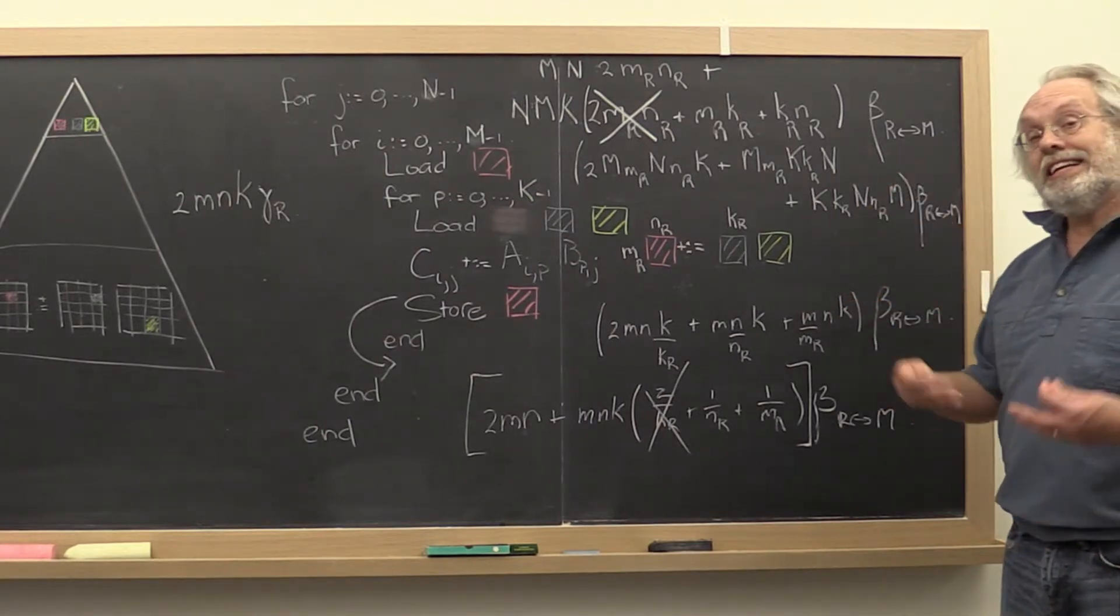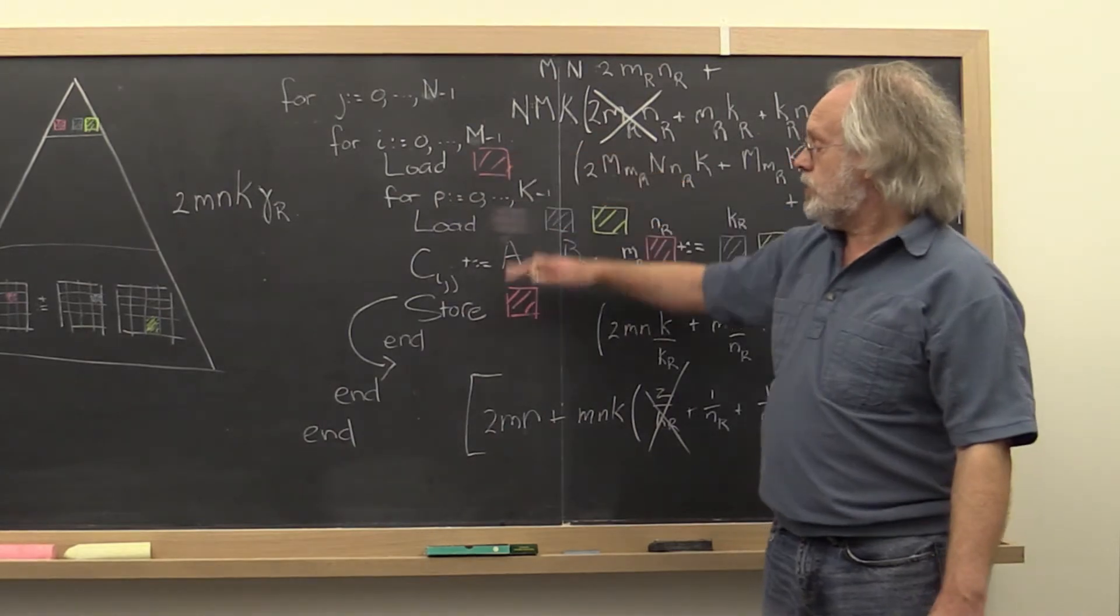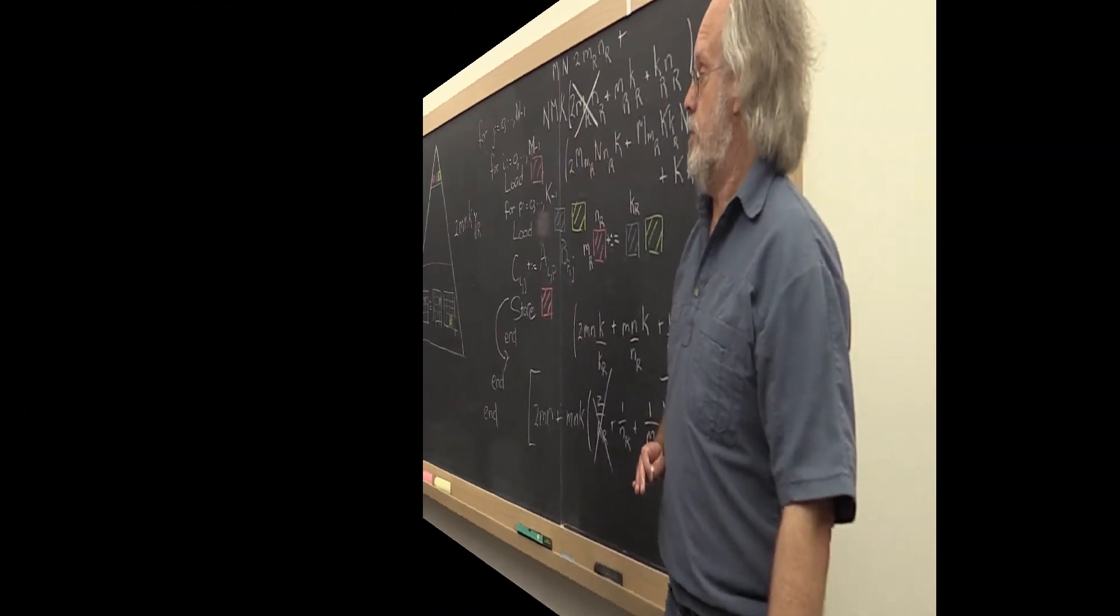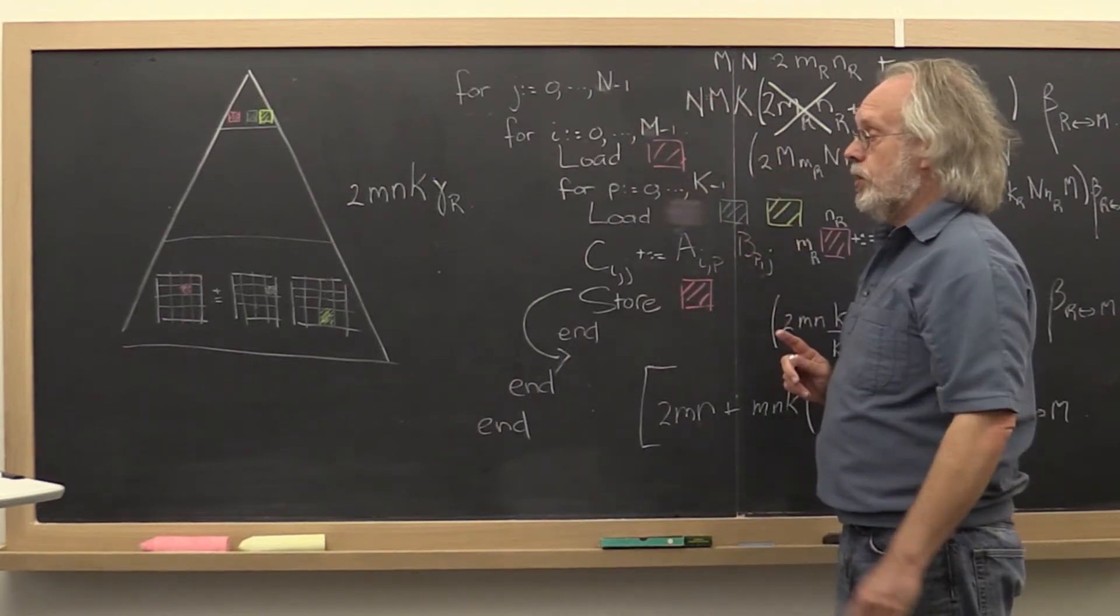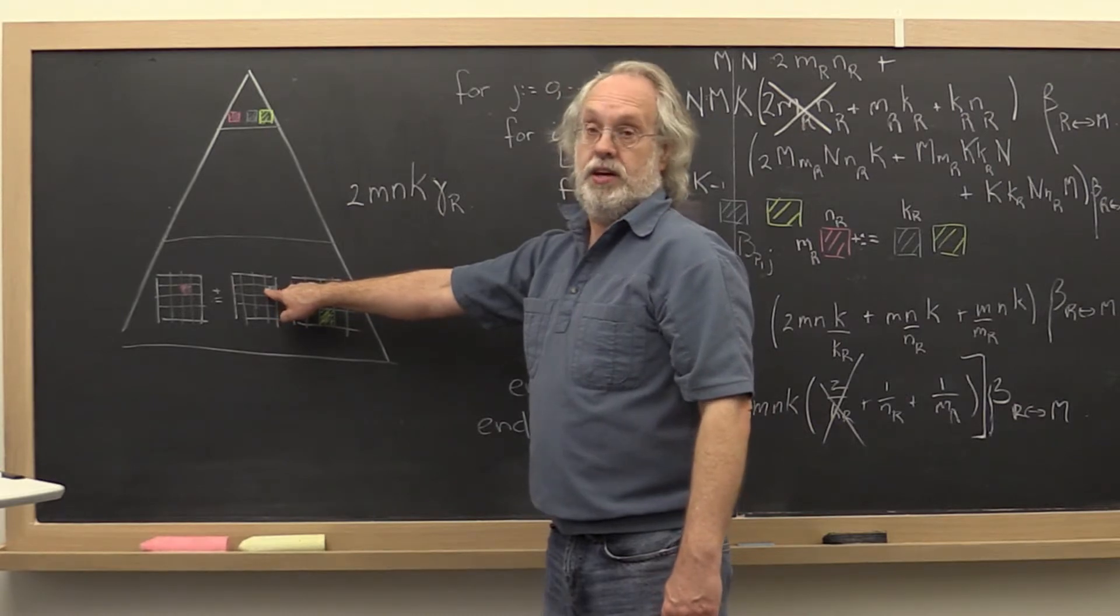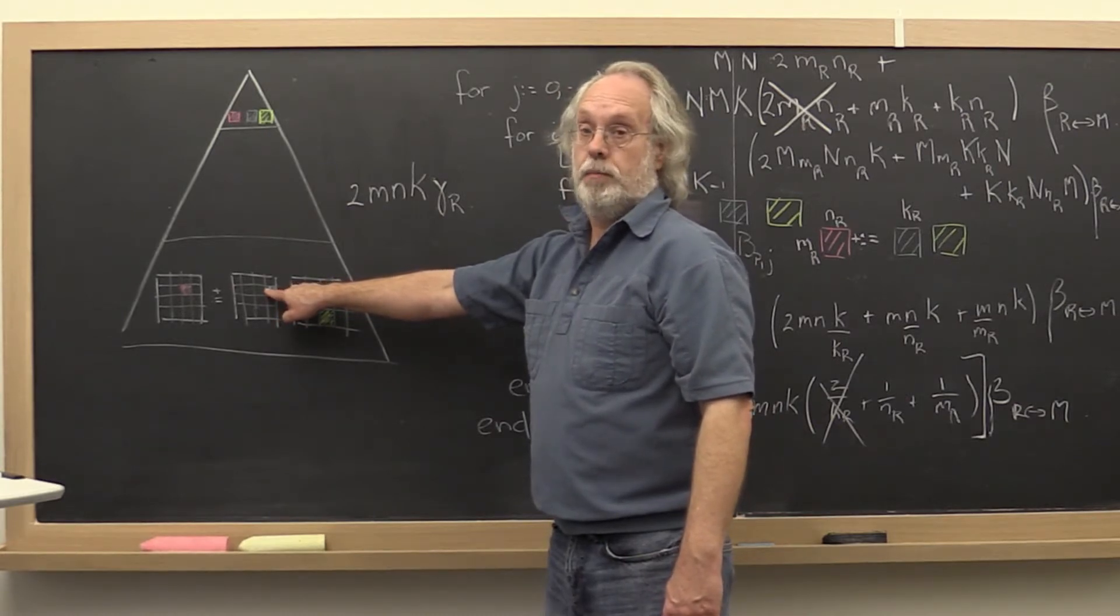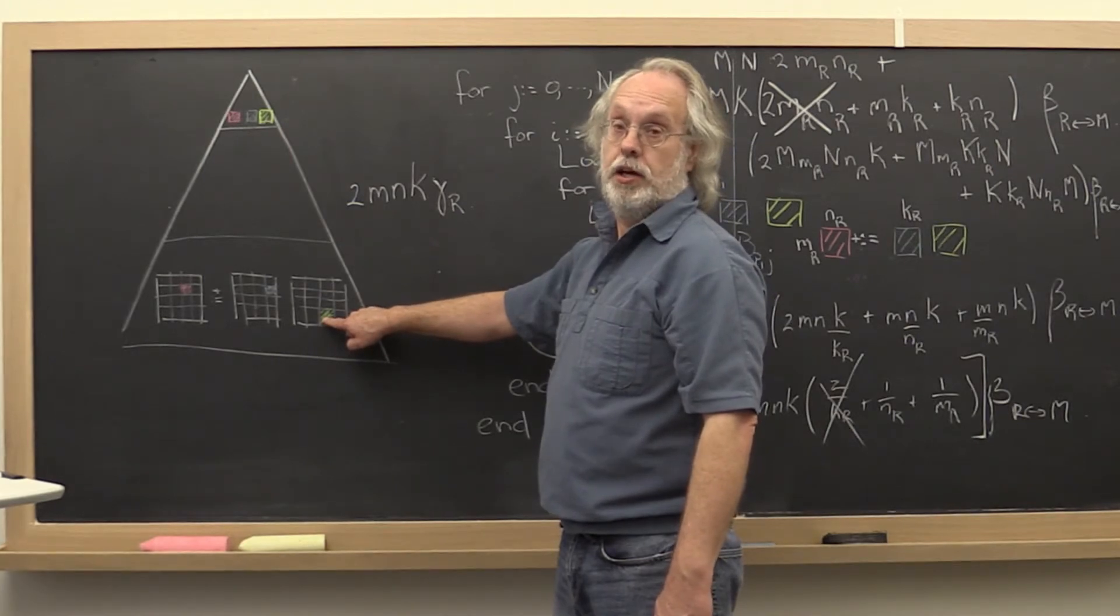So we've already done a little bit of optimizing by just being clever about when we load and when we store. You can imagine that we could have done different orderings of the loop where instead what we would have done is kept a block of A in registers over many computations or a block of B in registers over many computations.